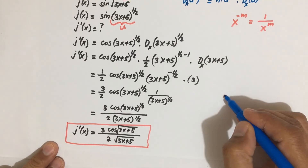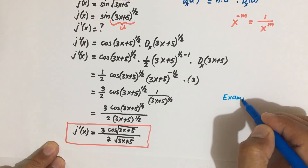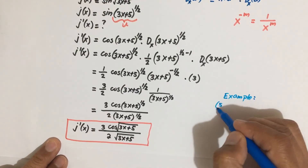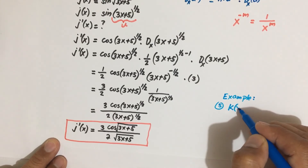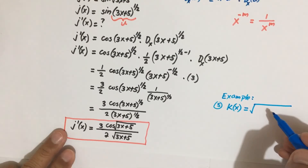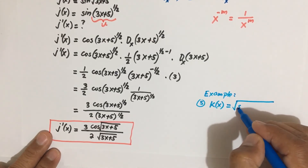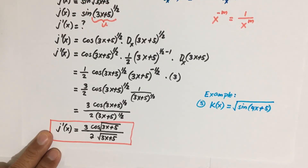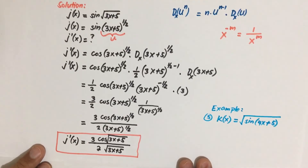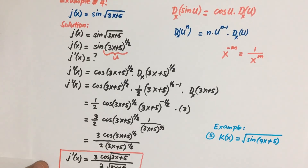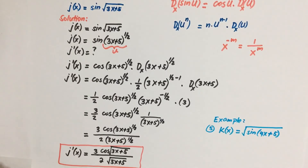For your practice, try to solve Example number 5. G(x) is equal to the square root of the square root of sine of 4x plus 5. Try to solve this and check the next video to see the answer. Thank you very much, have a nice day, stay safe and healthy always. God bless, bye.